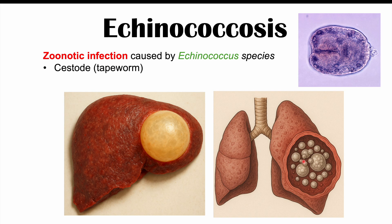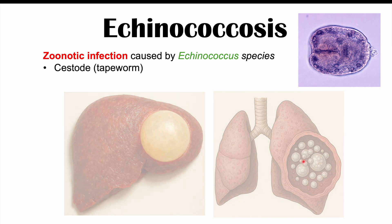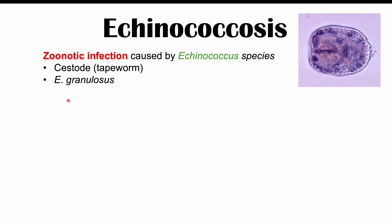There are multiple species of echinococcus, and the one we're going to focus on is echinococcus granulosus. This one will cause what we call hydatidosis or hydatid disease, and it's going to mostly affect the liver, causing cysts in the liver. It can cause cysts in the lungs and in the brain as well, but to a lesser extent.